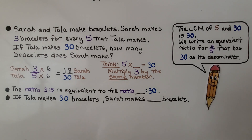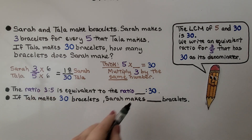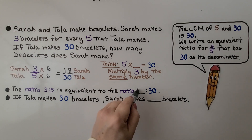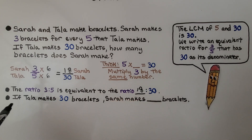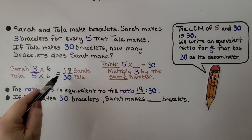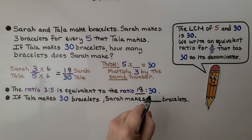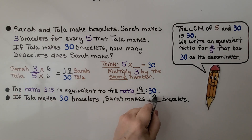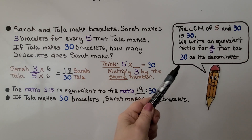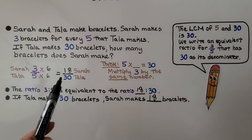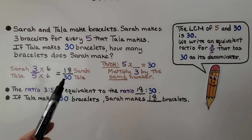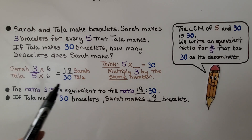The ratio three to five is equivalent to the ratio eighteen to thirty. So if Tala makes thirty bracelets, Sarah is going to make eighteen. The least common multiple of five and thirty is thirty, and we write an equivalent ratio for three-fifths that has thirty as its denominator.